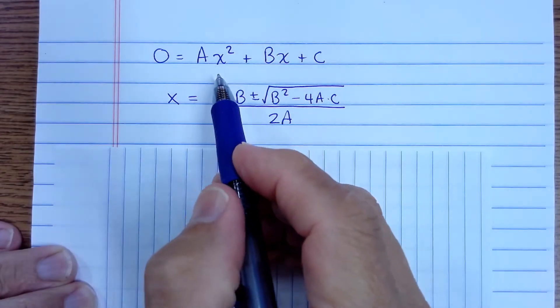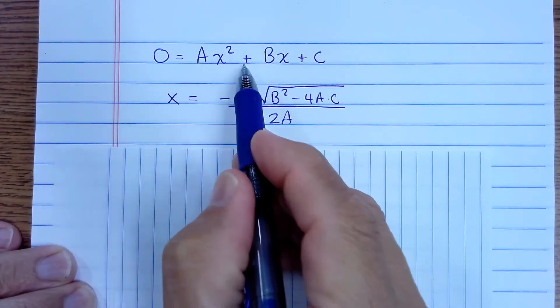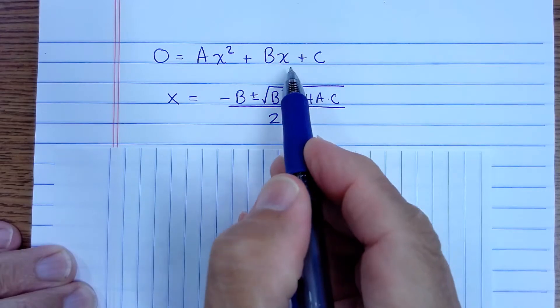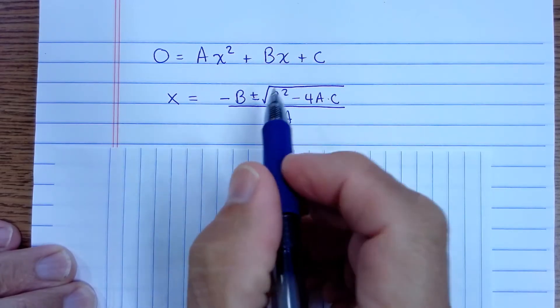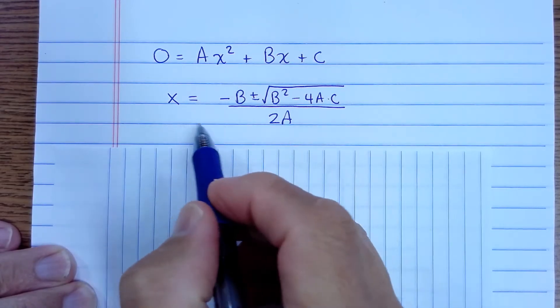All right so we have a quadratic equation here. We have ax squared plus bx plus c and there's two ways to solve it. One way you can solve by factoring and if you can't factor it you can use the quadratic formula.